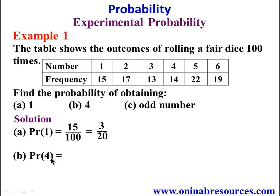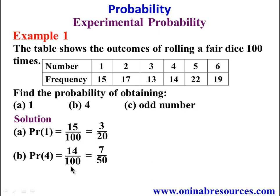For 1B, the probability of obtaining 4 is going to be the frequency of 4, which is 14 over 100 — that is the total number of times the dice was rolled. And in the simplest form, we have it as 7 over 50, since 2 divides both 14 and 100 to give 7 and 50 respectively.